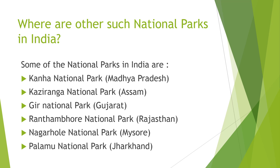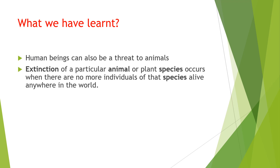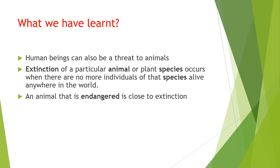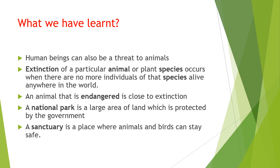What we have learned today: Number 1 — human beings can also be a threat to animals. Number 2 — extinction of a particular animal or plant species occurs when there are no more individuals of that species alive anywhere in the world. Number 3 — an animal that is endangered is close to extinction. Number 4 — a national park is a large area of land which is protected by the government. And lastly, a sanctuary is a place where animals and birds can stay safe.